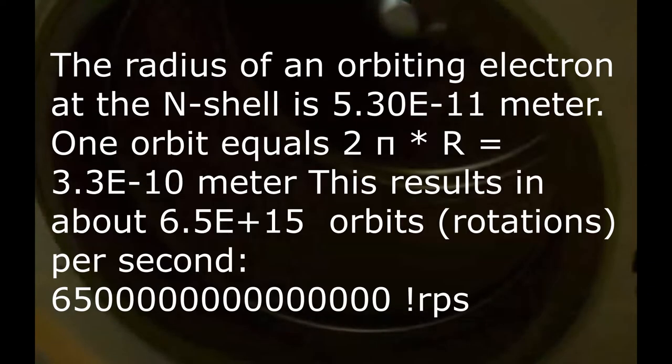The radius of an orbiting electron at the end shell is 5.3 E-11 meters. One orbit equals 2 pi times the radius, resulting in 3.3 E-10 meters. This results in about 6.5 E+15 orbits, rotations per second. Now we know why we cannot point out where the electron is at a certain moment, and we understand that this orbiting electron appears to be a kind of cloudy ring around the nucleus.